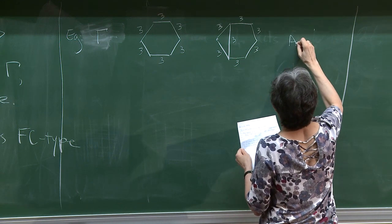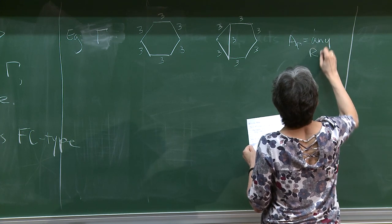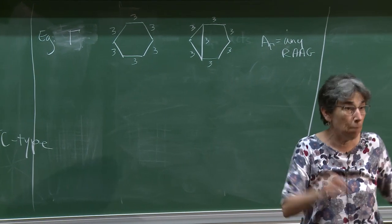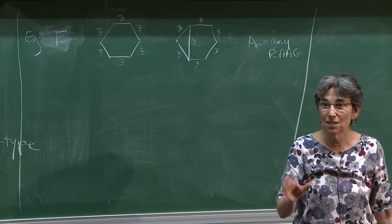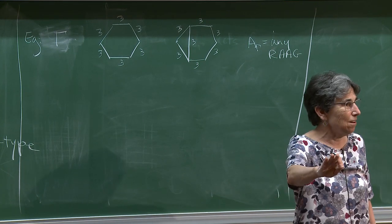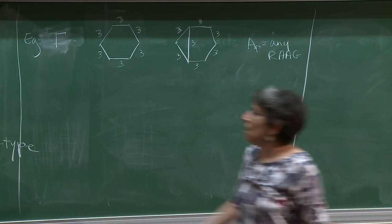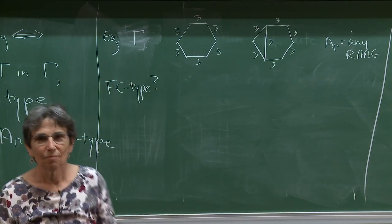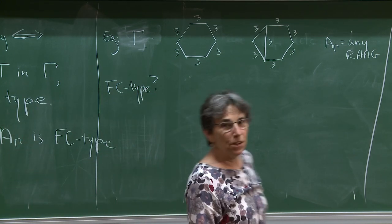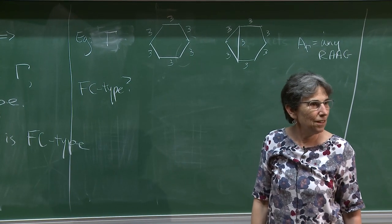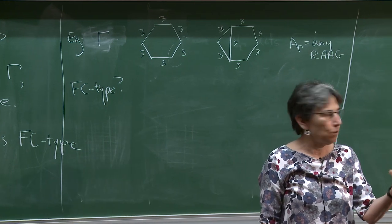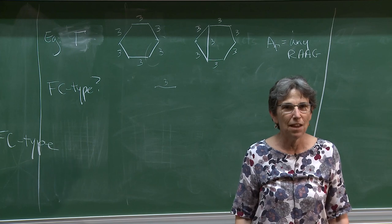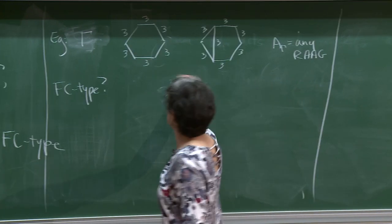The first example: a graph with edges all labeled 3. The only cliques are edges, and any single edge labeled 3 is the braid group on three strands — definitely finite type. Any single edge is a dihedral group. So yes, no problem there.